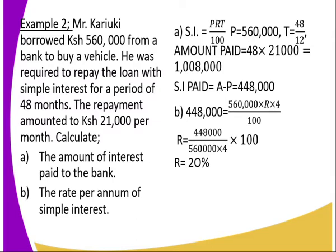To get the simple interest, it is the total amount minus the principal: 1,008,000 minus 560,000, which gives us 448,000. That is the interest paid. For Part B — the rate per annum — we use the formula. Principal is 560,000, rate is unknown, and time is 48 ÷ 12 = 4 years, divided by 100. Solving for rate, we get 20%, and that becomes the rate per annum.